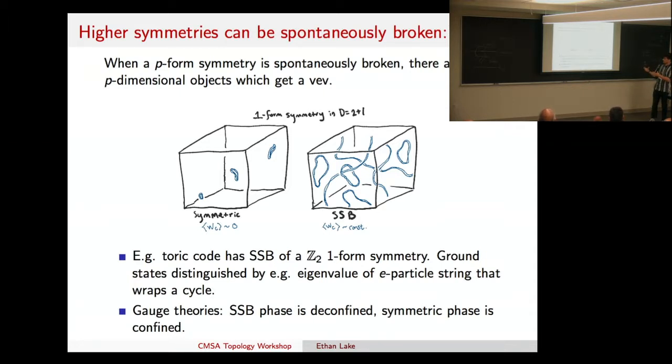The left picture is the symmetric phase, and in the right picture, the operator that inserts one of these strings gets a vev. So, I have this string net condensate going on. So, of course, an example would be, you know, the toric code is the right-hand side picture, where I have these strings have a Z2 character.